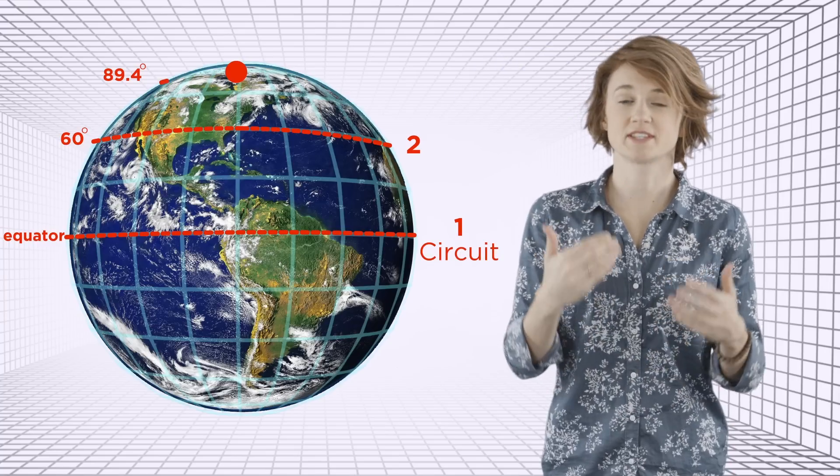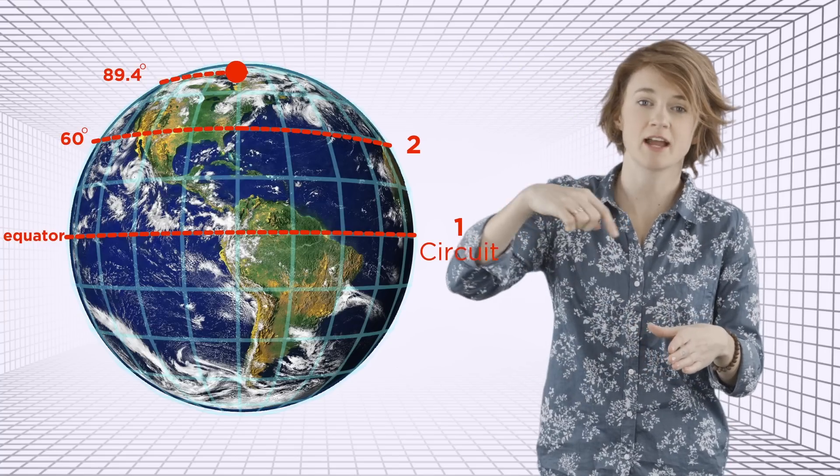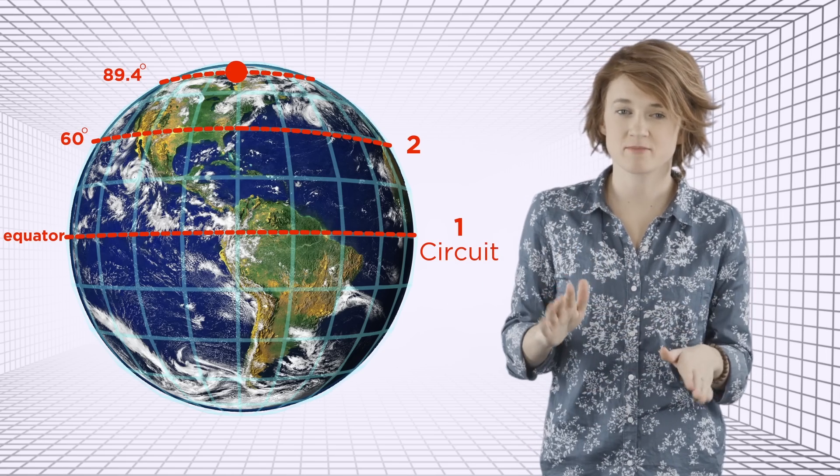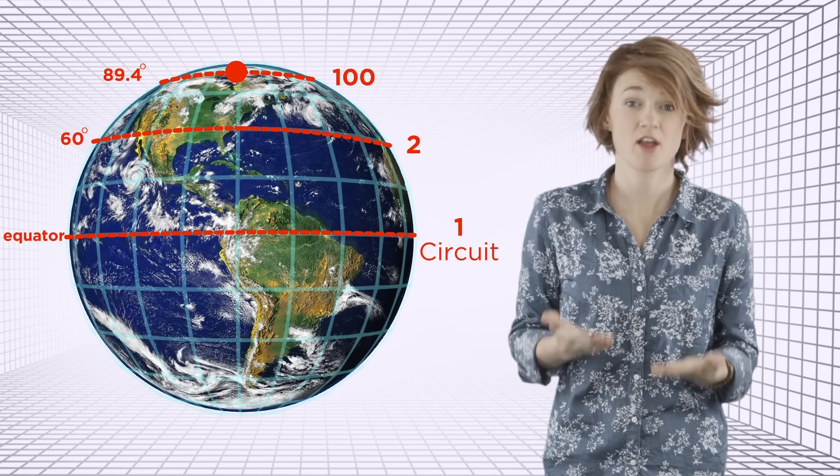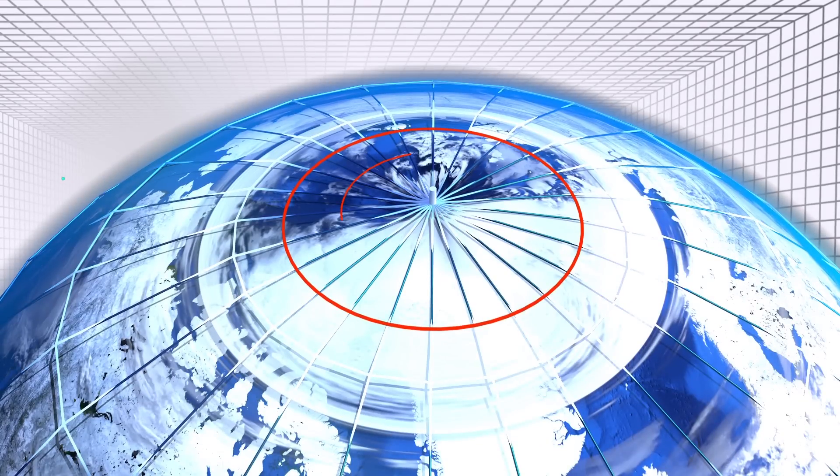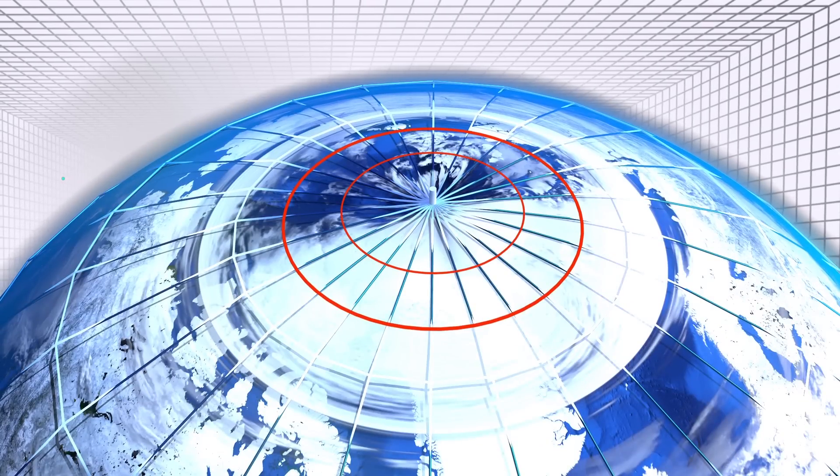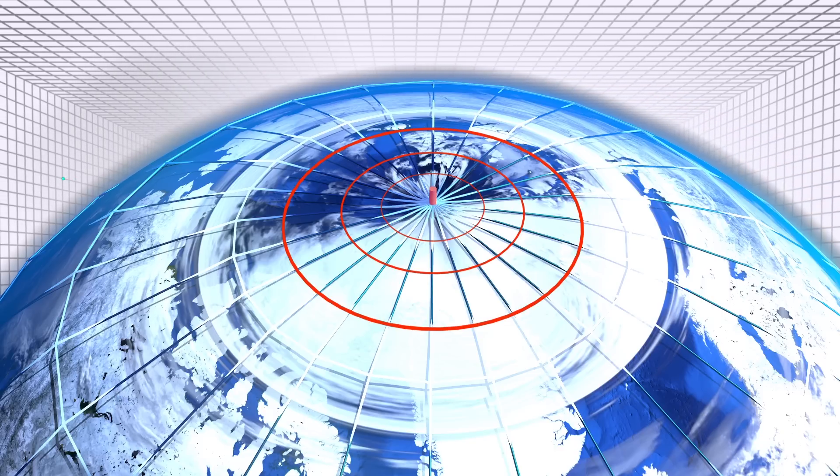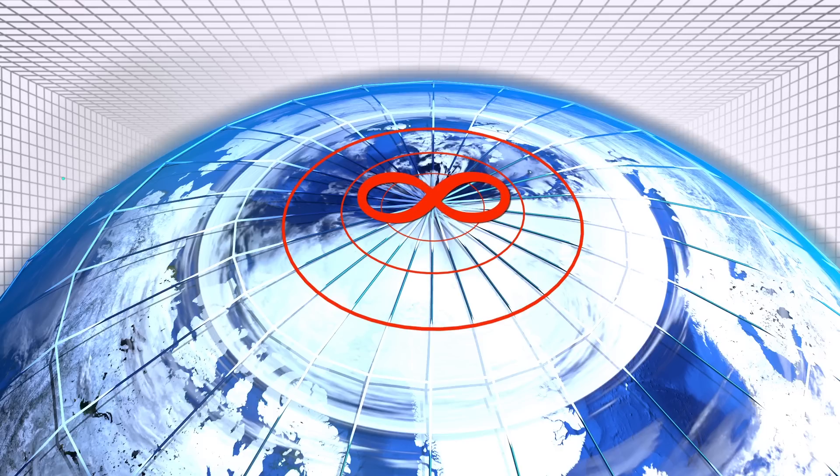The further north you make this journey, as your loop closes in on the North Pole, you'll cycle through the time zones quicker and quicker. Once you reach the North Pole, you'll cycle through infinitely many time zones during your 24-hour walk, whatever that means.